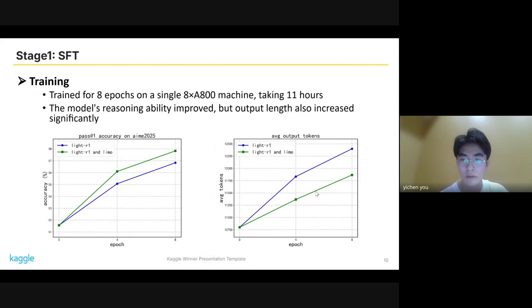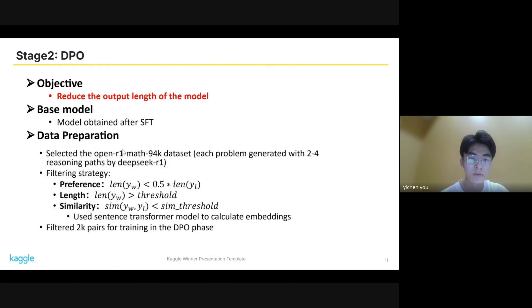But the output length also increased significantly, which extended the time to solve the problem. This is not what we designed. So to reduce the output length of the model, we applied DPO, or known as direct preference optimization.